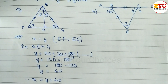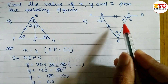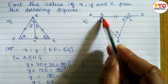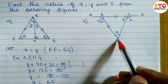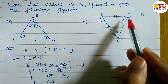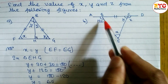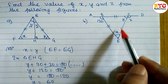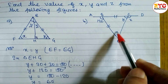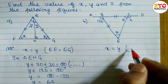Now look at question number B. You can see here again these two sides are equal, which means triangle BCE is an isosceles triangle. An isosceles triangle means the base angles are also equal — if two sides are equal, the base angles are also equal. So we can write x is equal to y.